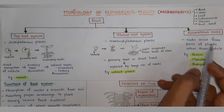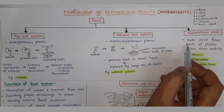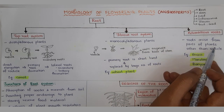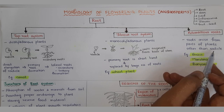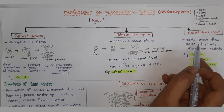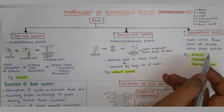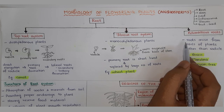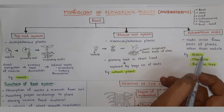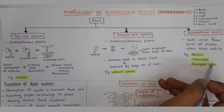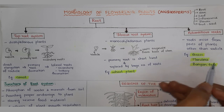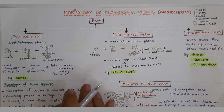Next, the adventitious root system. In this system, roots are raised from parts of the plant other than the radicle. Generally roots are formed from the radicle, but in this case they arise from other plant parts. Examples of adventitious roots are grass, monstera, and banyan tree. With this we have covered the types of root systems.